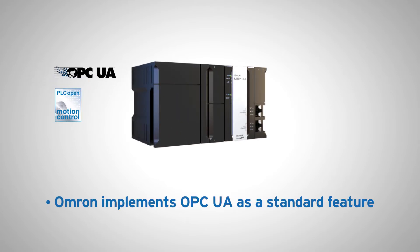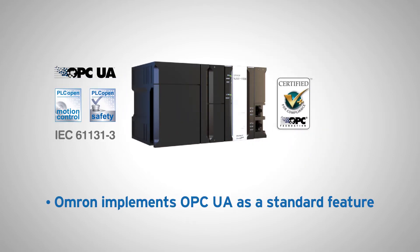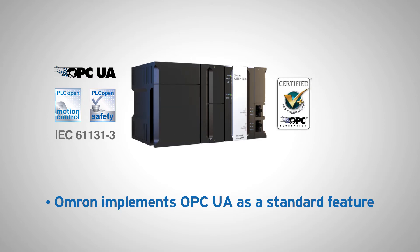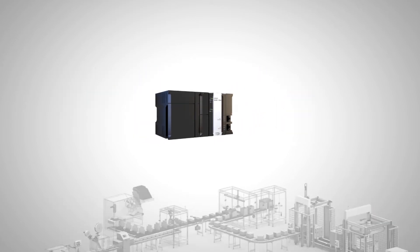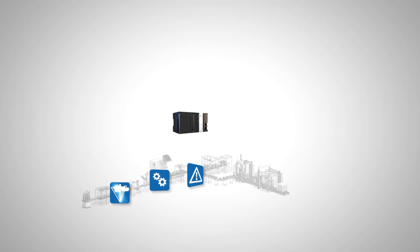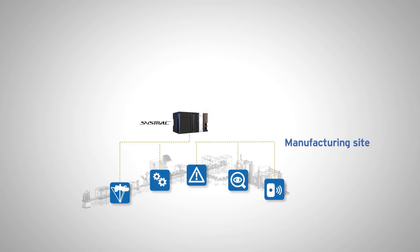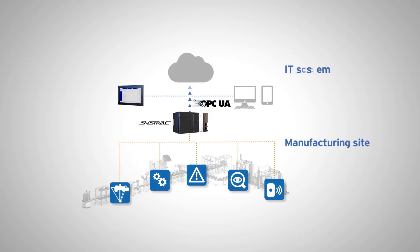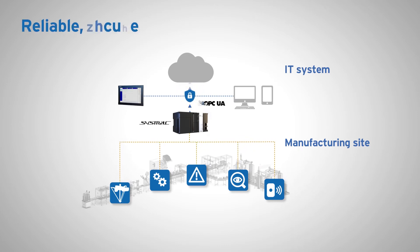Omron implements OPC UA as a standard feature — an information exchange standard for industrial communication. NJ5 with OPC UA provides open and direct communication between machine and IT systems. This solution ensures reliable, secure and easy communication.